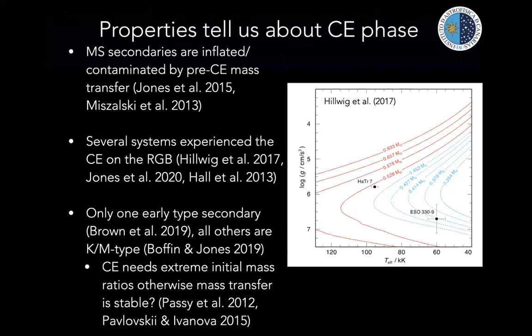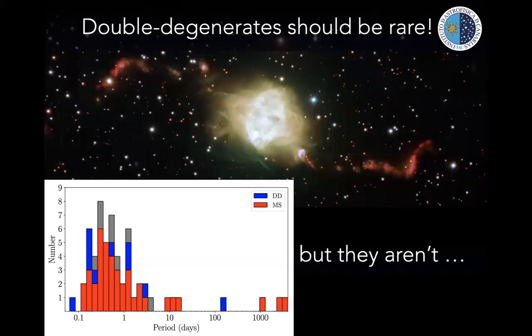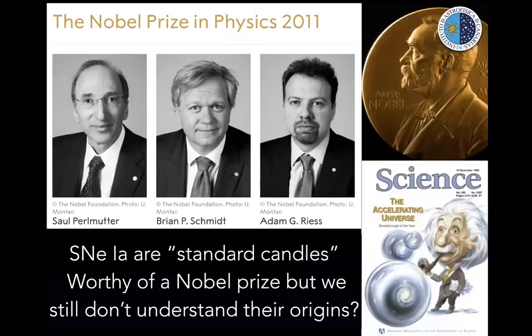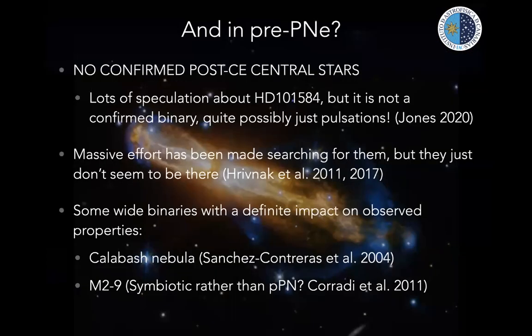Among known binary central stars, we find many that are in fact two white dwarfs — systems that should be both very difficult to detect and quite difficult to form. The fact that we see an overabundance of these systems, which are particularly visible in this evolutionary phase, may indicate our understanding of their formation is wrong and many more await detection. This has implications for understanding the origins of Type Ia supernovae — a standard candle worthy of a Nobel Prize, but whose origins remain unclear — one of which could be the merger of double-degenerate stars.